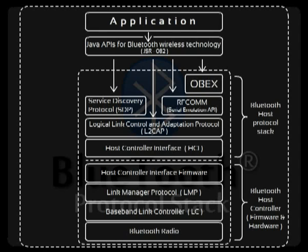One main advantage is that existing legacy applications can be adapted to work with Bluetooth technology. The Bluetooth protocol architecture also allows for the use of commonly used application protocols on top of the Bluetooth specific protocols. The lower layers of the Bluetooth stack are designed to provide a flexible base for further protocol development. RFCOMM protocols are adopted from existing protocols and have been only slightly modified for the purpose of Bluetooth.